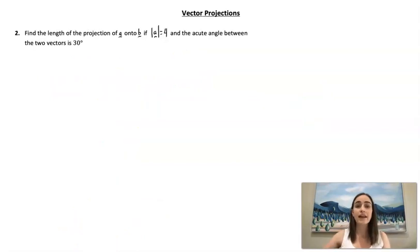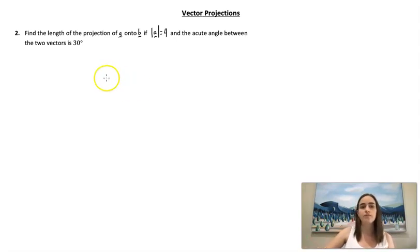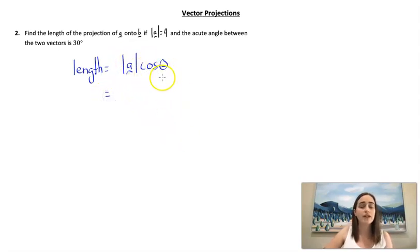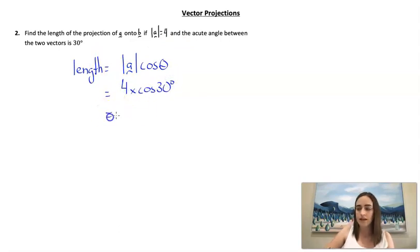Our second example asks us to find the length of the projection of A onto B, given that A is four units long and the acute angle between the two vectors is 30 degrees. Thinking back to how we derived the formula, the length of the projection is |A| cos theta. So with the given values, we get 4 × cos 30° = 2√3.